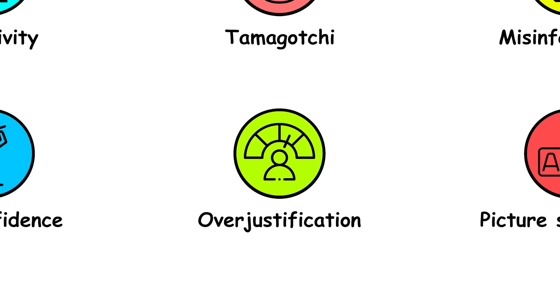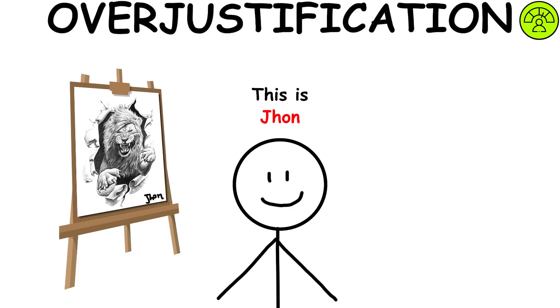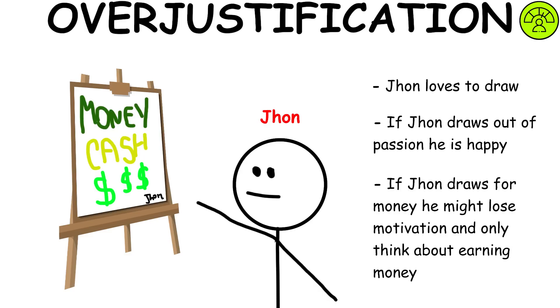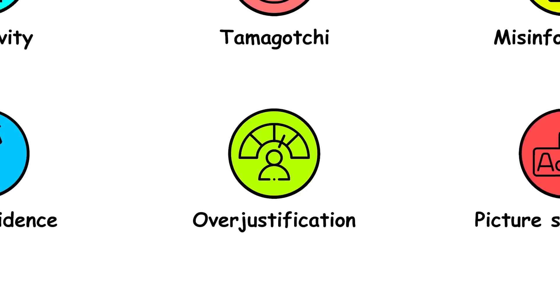Overjustification effect. The overjustification effect occurs when an expected external incentive, such as money or prizes, decreases a person's intrinsic motivation to perform a task.